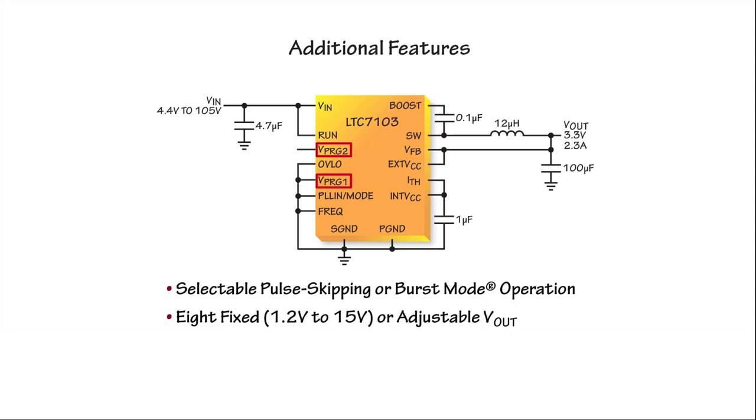An external resistor divider can also be used to select any desired output voltage. Voltage loop compensation can be achieved with no external components by selecting internal loop compensation.